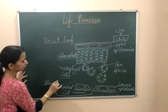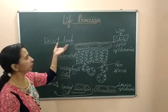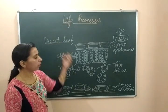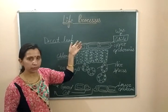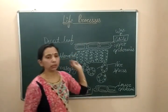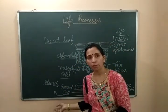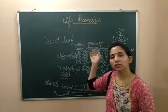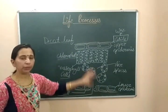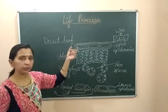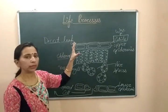In the case of dicot plants, stomatas are more in number at the lower epidermis but less in number at the upper epidermis. In the case of monocot leaves, stomatas are equally distributed at both epidermis — they may be found in both the upper epidermis and lower epidermis. This is the main difference between monocot and dicot leaf.